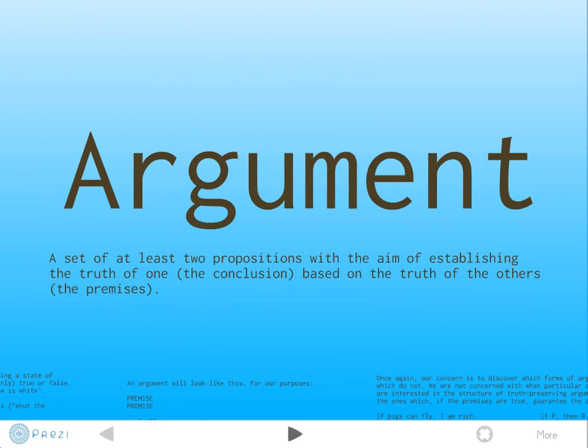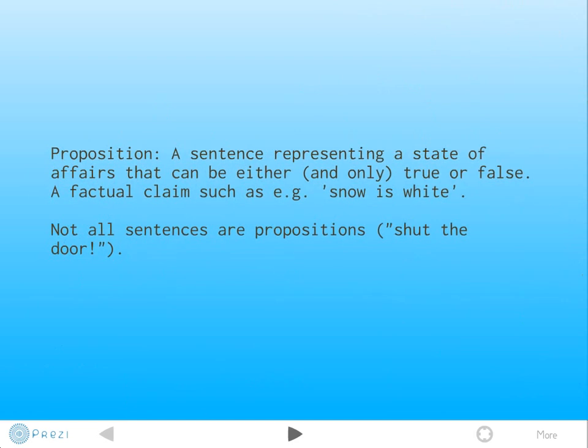We're concerned with deductive logic in the context of arguments. So what's an argument? It's a set of at least two propositions with the aim of establishing the truth of one, the conclusion, based on the truth of the others, the premises. What's a proposition? A proposition is a sentence of English representing a state of affairs that can either and only be true or false. It's a factual claim, such as snow is white. Not all sentences are propositions—only the ones capable of being either true or false. A command, an imperative, such as shut the door, can't be true or false.